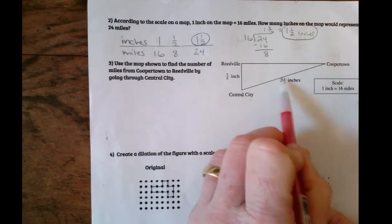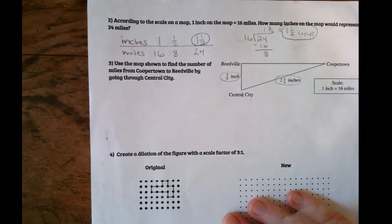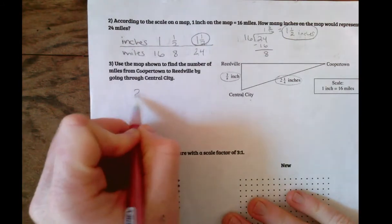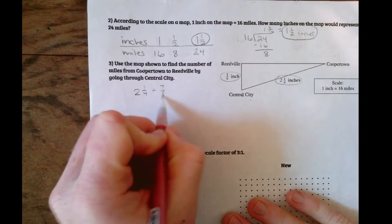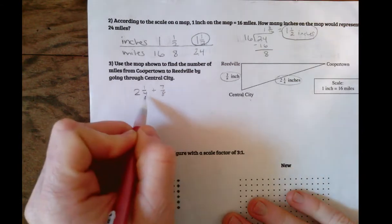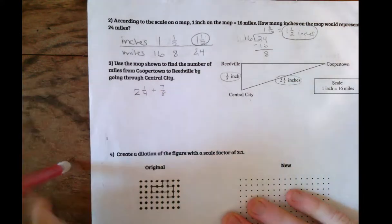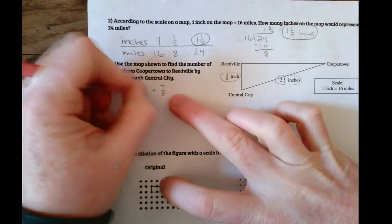So first of all, I need to figure out what this is in inches. So two and a fourth plus seven eighths. We need to have this be in eighths. So I know that one fourth is the same as two eighths.